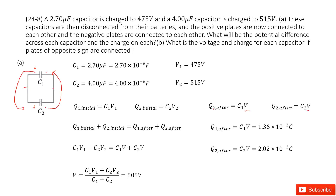The final charge for Q1 is C1 times V. The final charge for Q2 is C2 times V. Since charge is conserved, initial charge equals final charge. We input these equations and get an equation we can solve to find the function for the potential difference V. Inputting the given quantities, we get the answer.